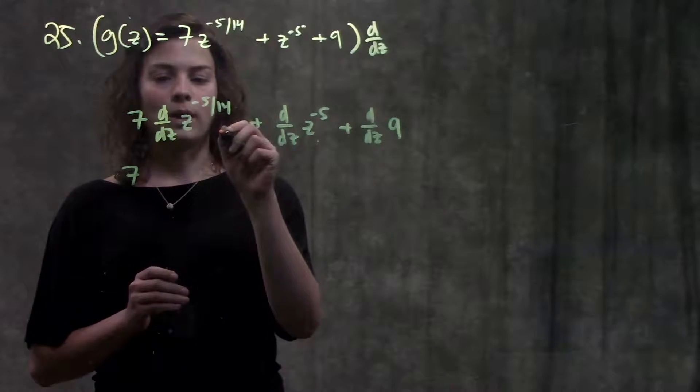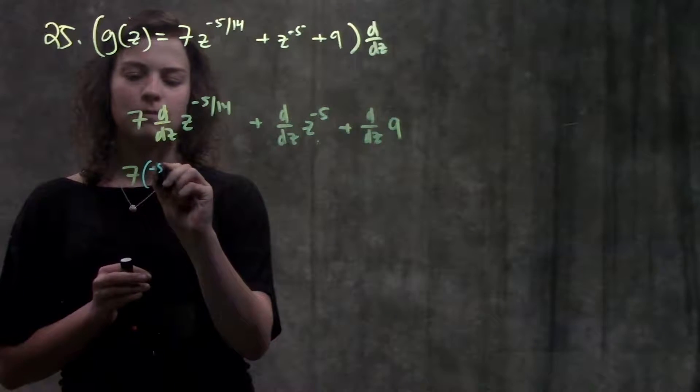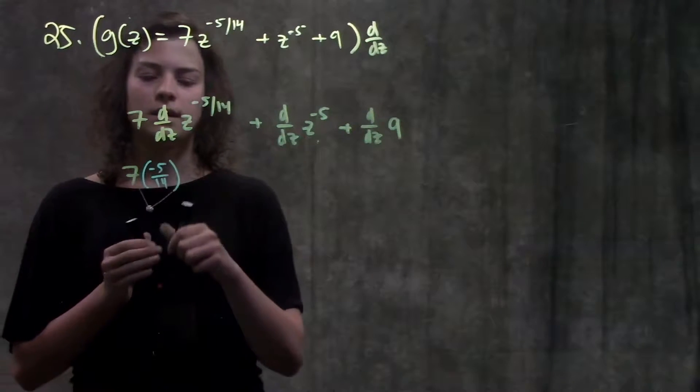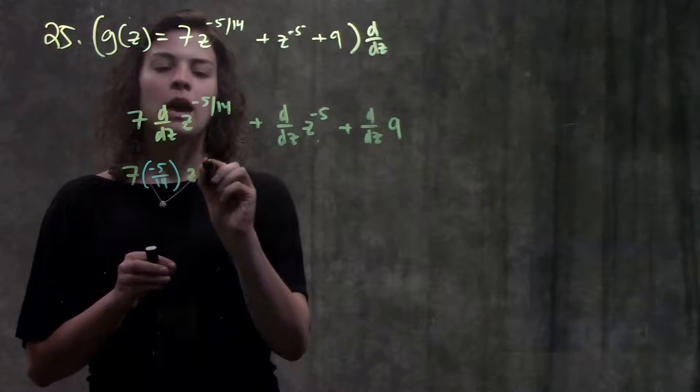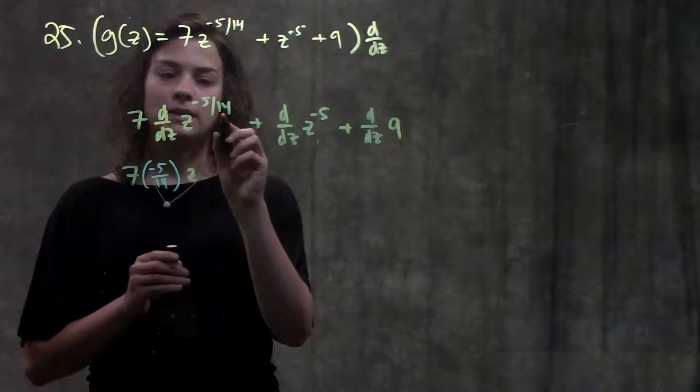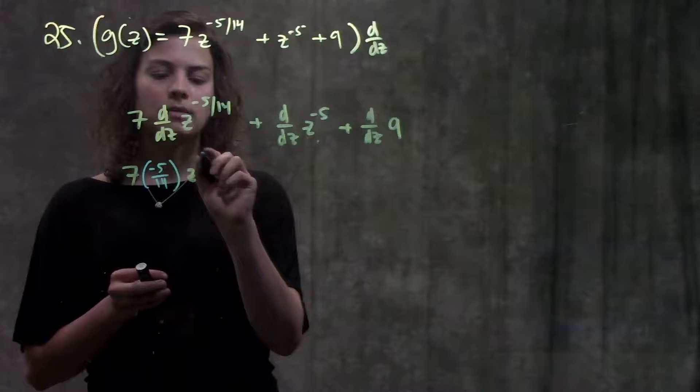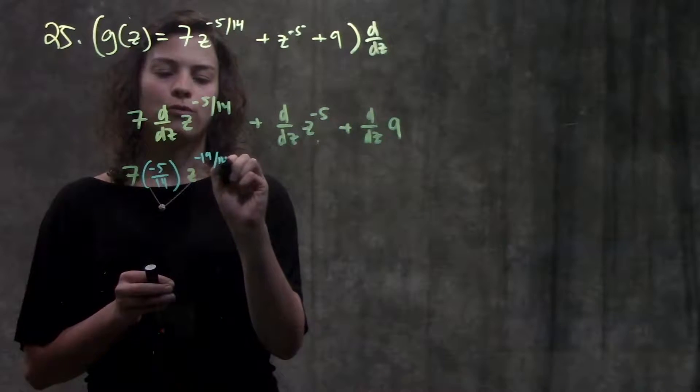and then subtract 1. So I bring this exponent to the front. So I just have minus 5 over 14 times z. When I subtract 1 from minus 5 over 14, I'm going to end up getting minus 19 over 14.